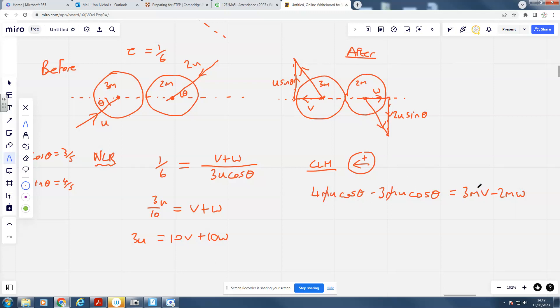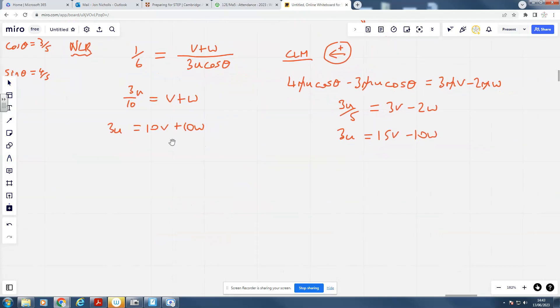Okay, the M's cancel here. 4U cos theta minus 3U cos theta is just U cos theta, which is just U times by 3 fifths. That's going to be 3U over 5, and this is going to be 3V minus 2W, and so 3U is going to be 15V minus 10W. Now, the temptation here might be to eliminate U. Don't do that. Never eliminate U. You're trying to solve for V and W here, so I'm going to add these two together. Call this one A, call this one B, add together.